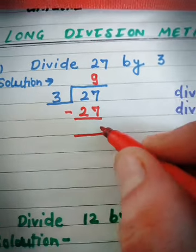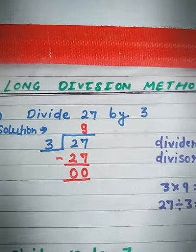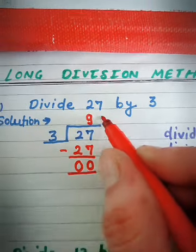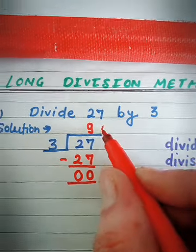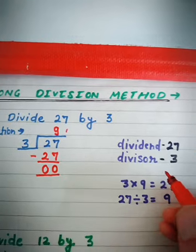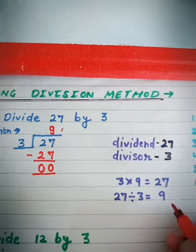The result is 0. Now the quotient is 9. 27 is the dividend and 3 is the divisor and the quotient is 9.